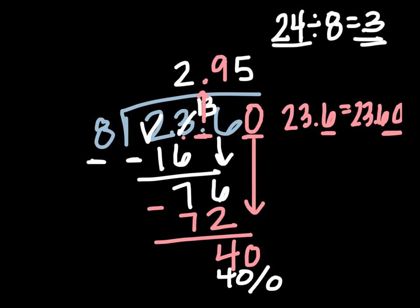So if we rewind back to that question, how many miles did Bradley hike each hour? We would say that would be two and 95 hundredths of a mile.